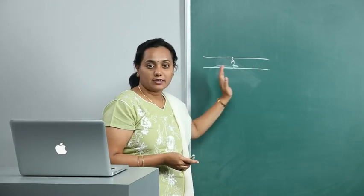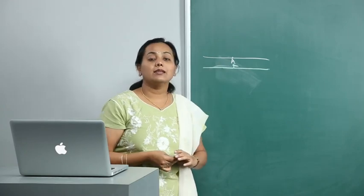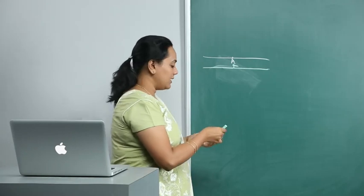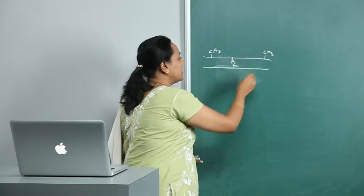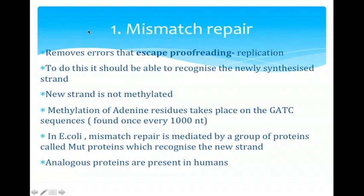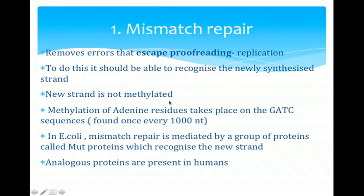The newly synthesized (nascent) strand is non-methylated, whereas the original strand is methylated. This methylation occurs on the adenine residues at GATC sequences, which are found once every thousand nucleotides. In E. coli, this mismatch repair is mediated by a group of proteins called Mut proteins, which recognize the new strand; analogous proteins are also present in human beings.